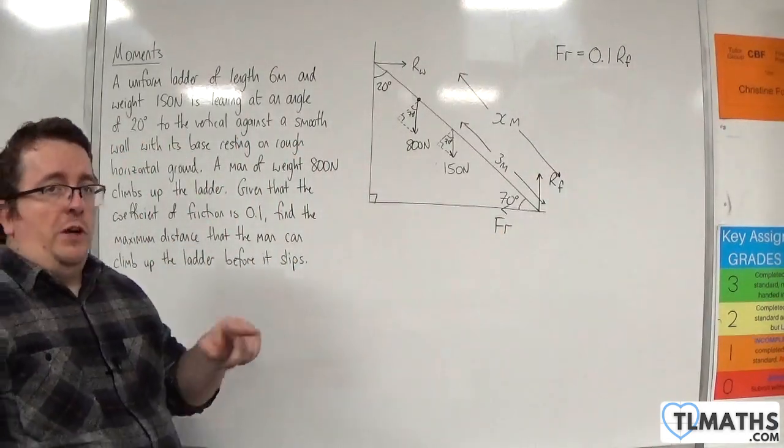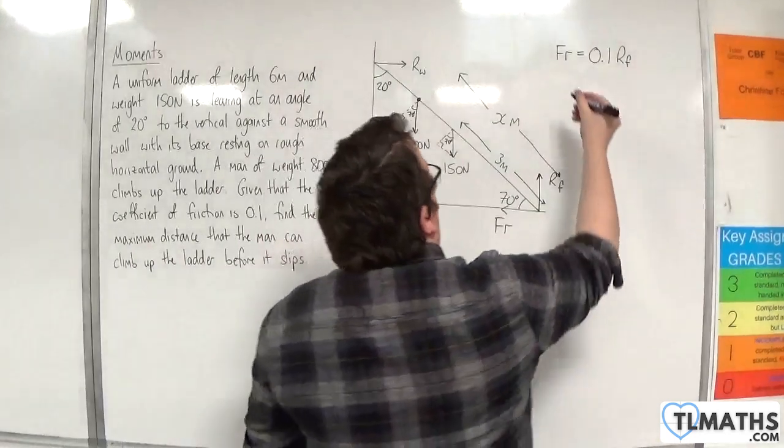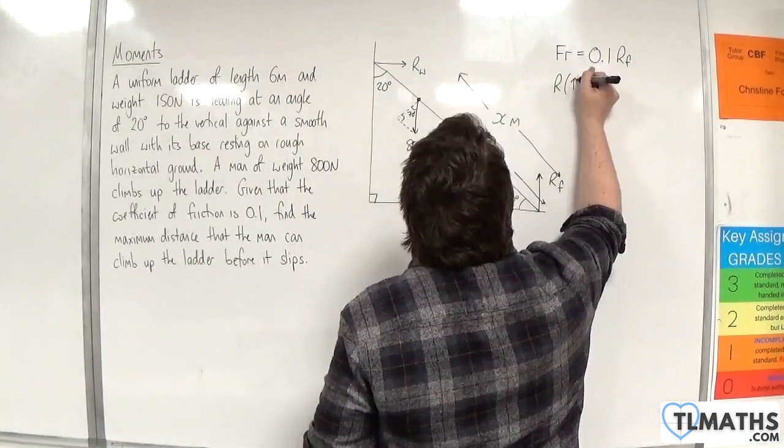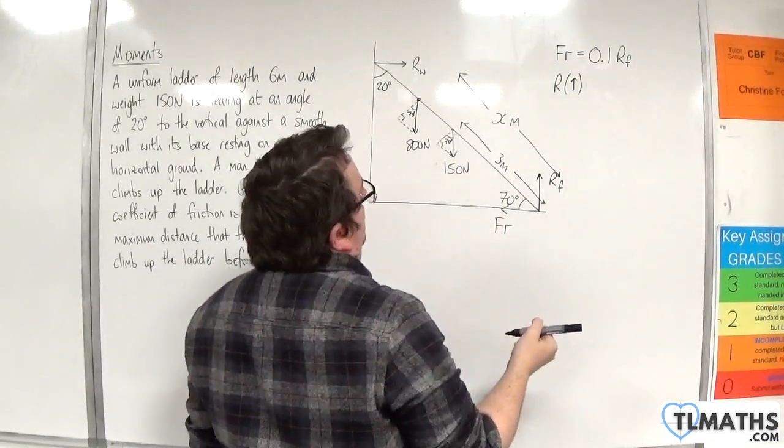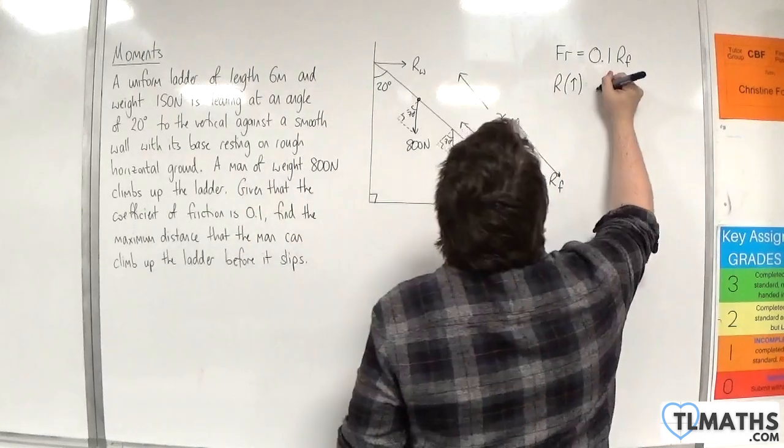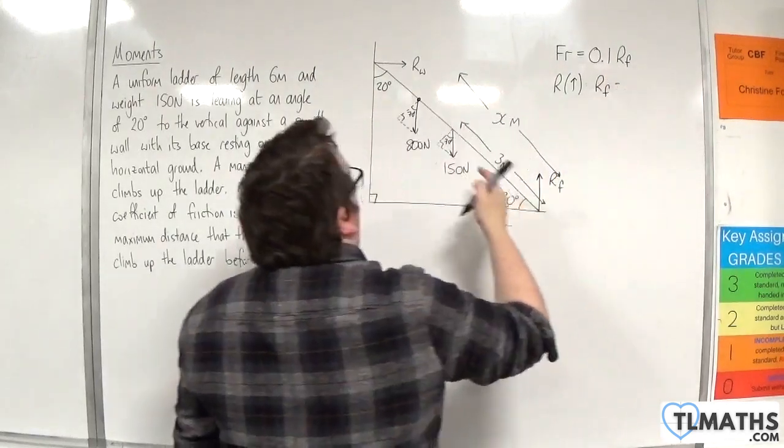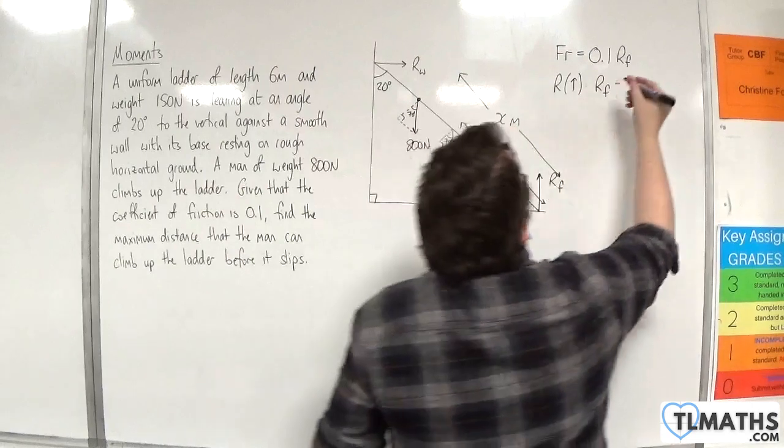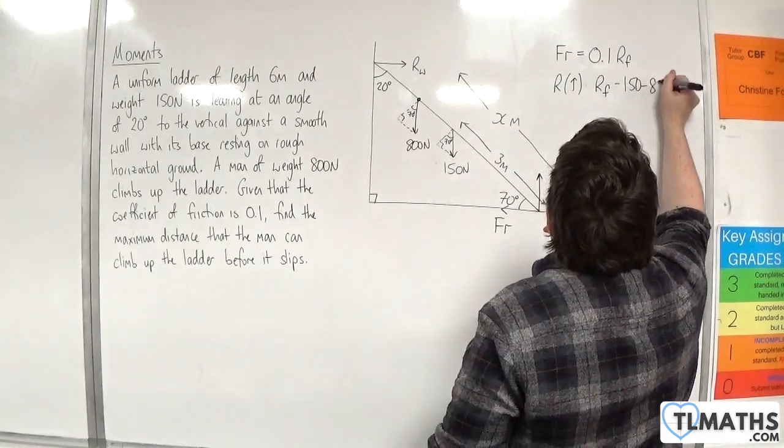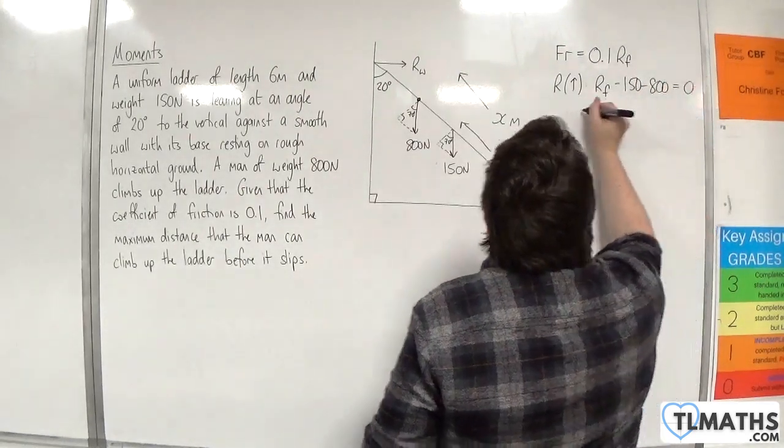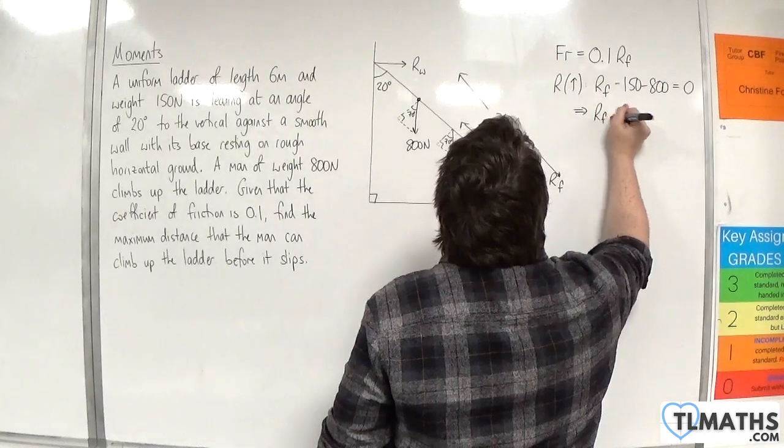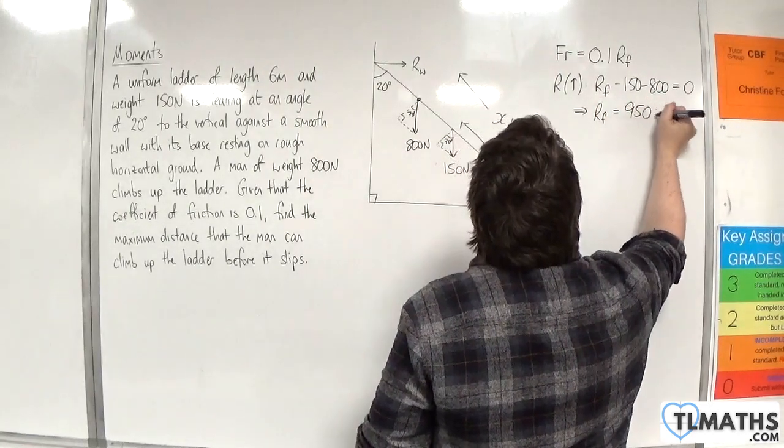Now let's resolve forces. I'm going to resolve vertically first, taking upwards as positive. We have Rf, take away 150, take away 800, is equal to 0. So Rf must be 950 newtons.